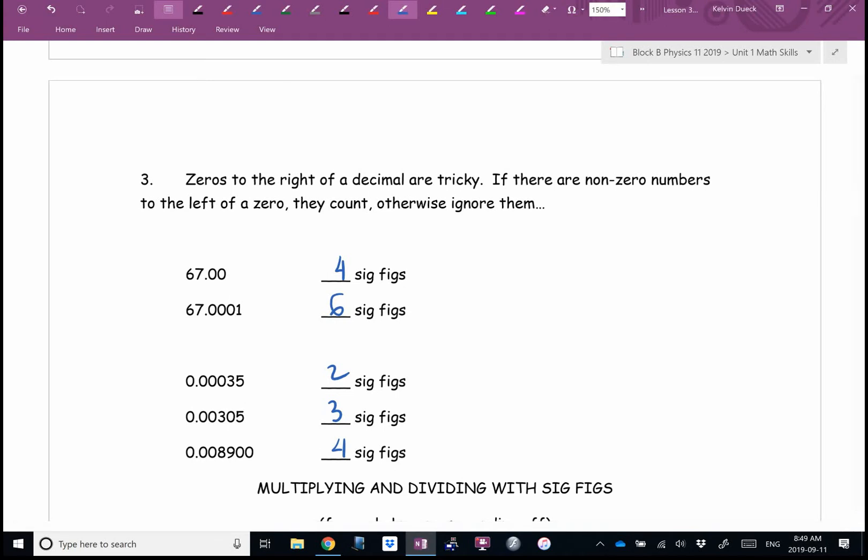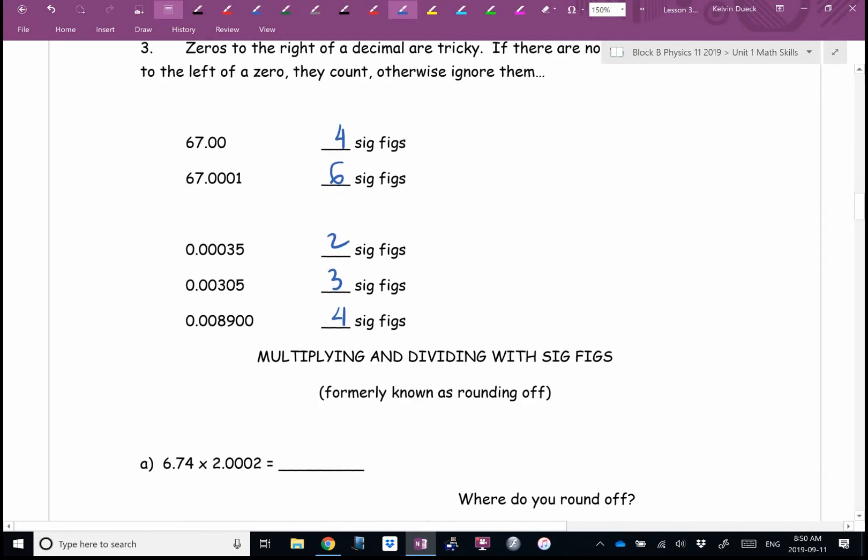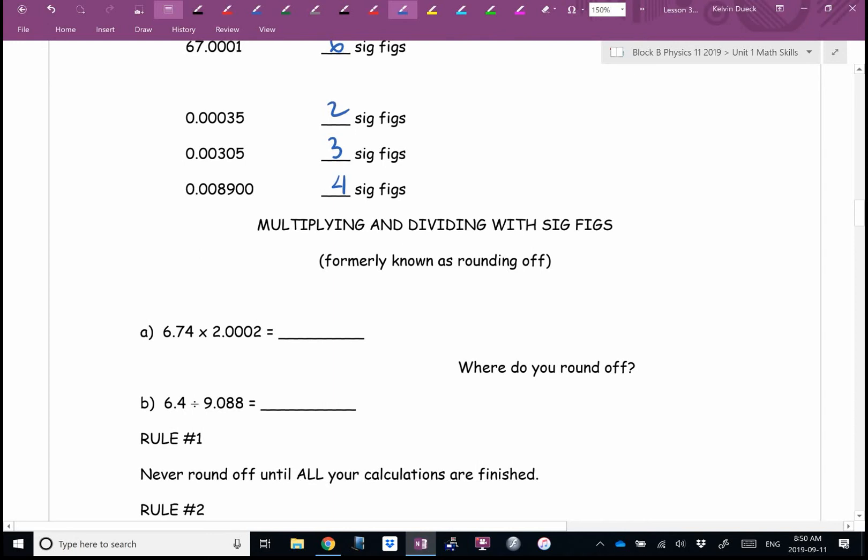Scientific notation is really nice for sig figs. You just count the number of digits. Now I'm going to try and explain what we just did in English. Rules for sig figs: any non-zero digit counts. The tricky part is zeros. Zeros to the left of a decimal point count.